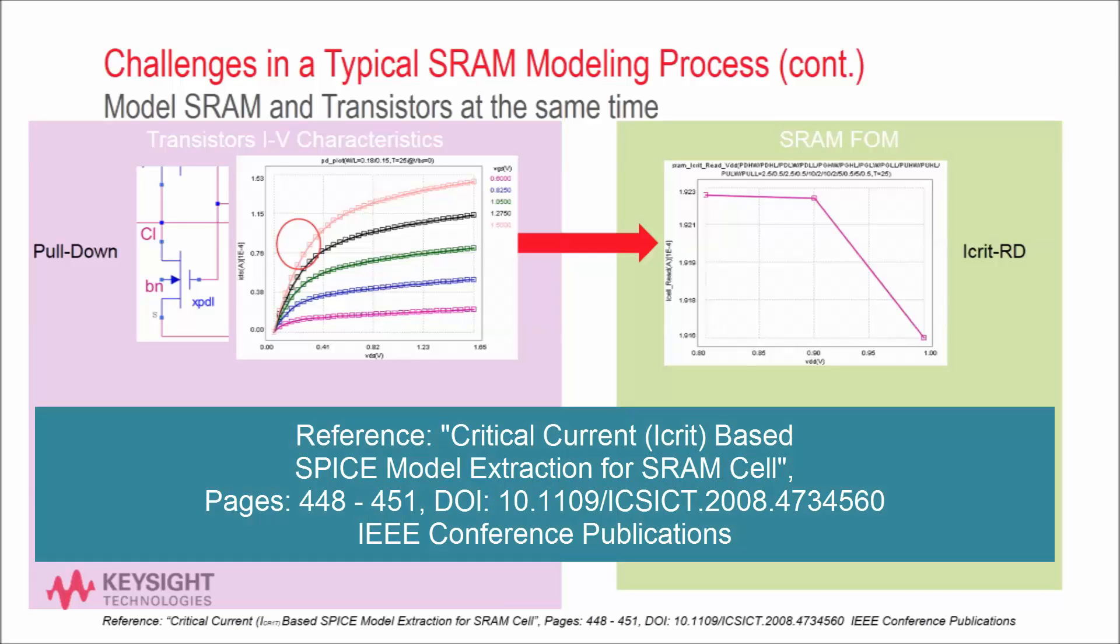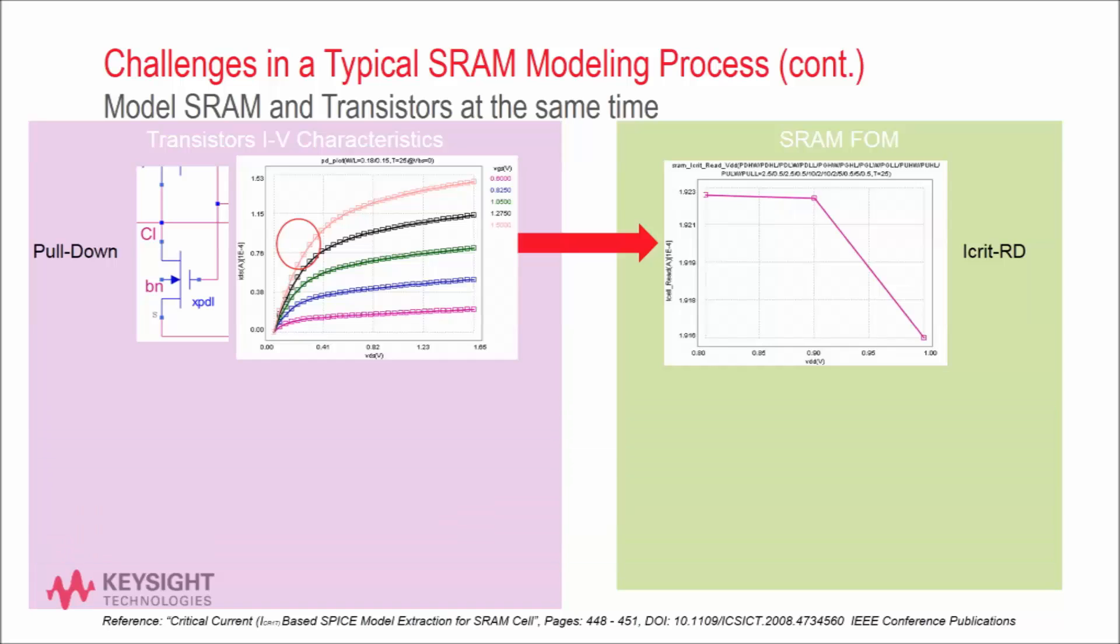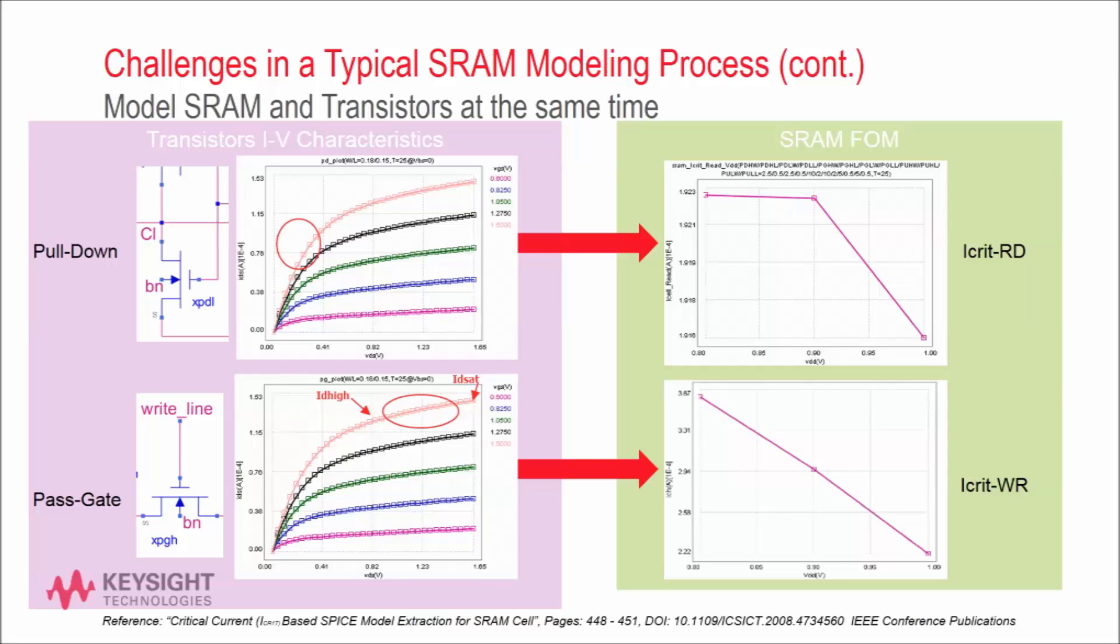At the bottom of this slide, I have referenced an IEEE paper. The paper describes how certain sections of an individual transistor DC-IV curves influence different circuit figures of merit. As you see from the plot, the linear region on the IDVD curve of the pull-down device has the most influence on the critical read current. The region between IDH and IDS on the IDVD curve of the pass-gate device has the most influence on the critical write current. By looking at these graphs at the same time and carefully tuning the related model parameters, you can achieve a very good fit to the critical current without lots of model extraction iterations.